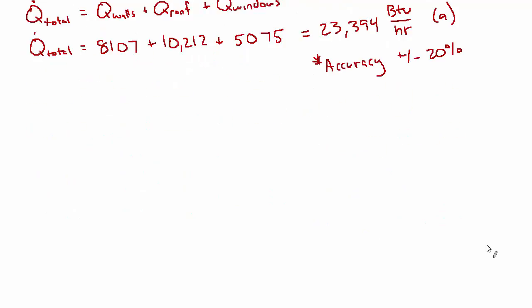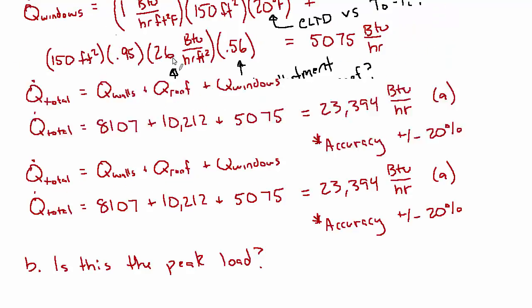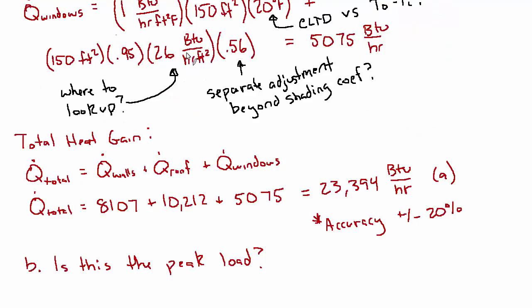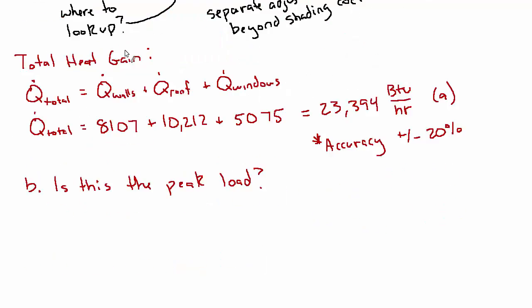And then for part B, they want us to consider the question of is this the peak? And I guess my answer would be it's hard to say. I think it could be the peak. But I wouldn't be surprised if it isn't. And I think it depends largely on when the window load peaks. And since the window was kind of one of the confusing areas for this problem, that's what makes it hard to say. I'm thinking about this term right here, this 26. This is a big driver in how much heat transfer happens through the windows. And I'm not sure where that's getting looked up. So whenever that number is a maximum, that's going to cause the heat transfer through the windows to be a maximum. And I wonder if that might happen earlier in the day. So when does the solar load factor peak?